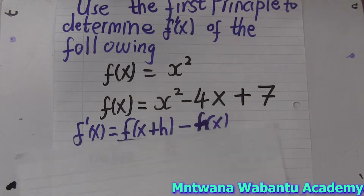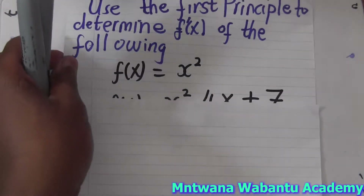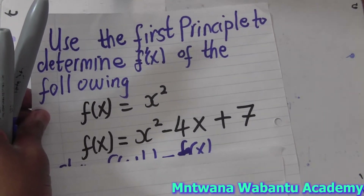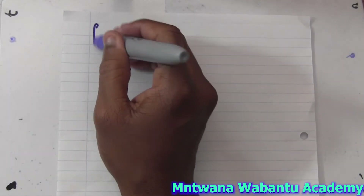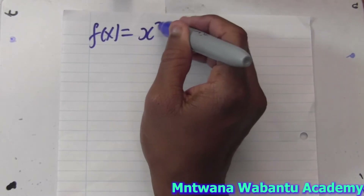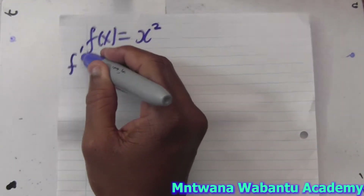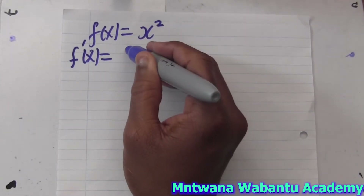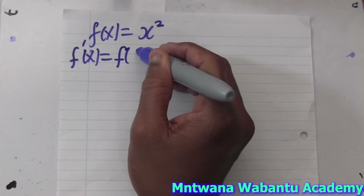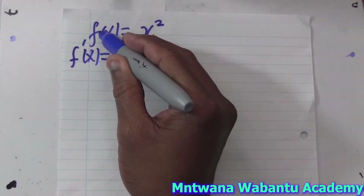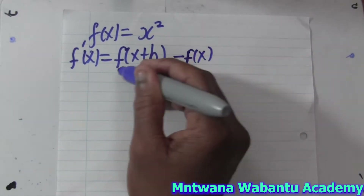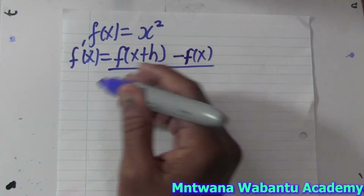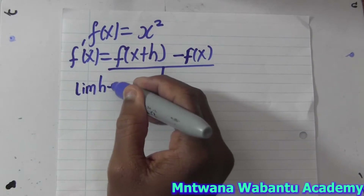So what we're going to do is f(x) = x². So we'll say f(x) = x², right? So our formula says f prime equals f(x+h) minus f(x) over h, limit h approaches zero.